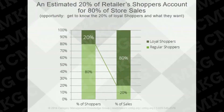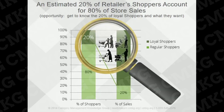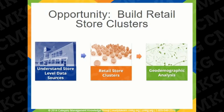Retailers estimate that 20% of their shoppers account for 80% of store sales, so finding out what their best shoppers want is essential. By scanning purchases, stores track what's selling, but when that data is tied to loyalty cards, merchants obtain richer information on who is buying what. Services that may seem helpful to consumers could be a way to get them to spend more. Once we review the data sources, we cover how to build retail store clusters.